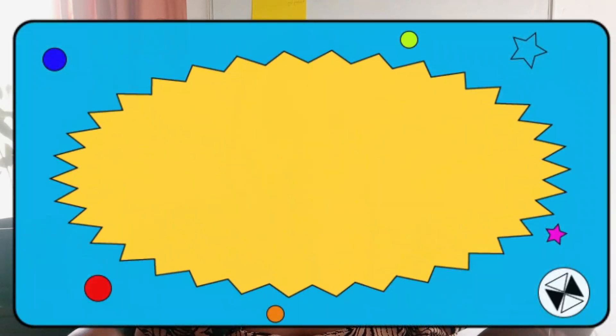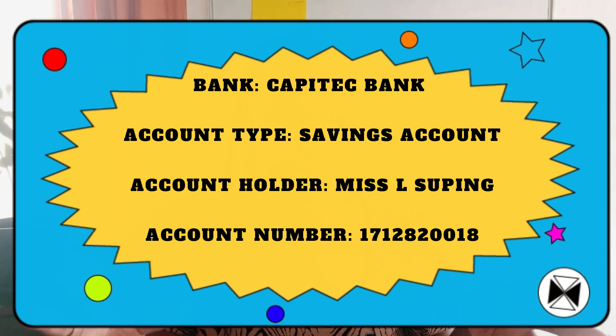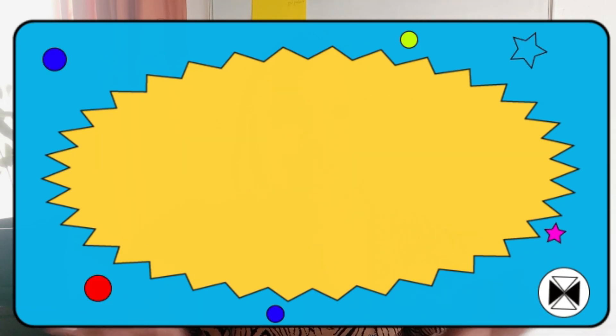If you're interested in taking part in those group lessons, please make sure that you make a payment to my account. I'm going to put a banner here with the account details. As a reference, please write your name and your surname. Once you've made the payment, please send the proof of payment to this number.